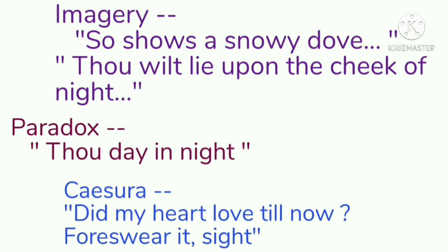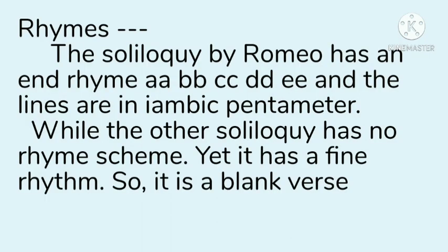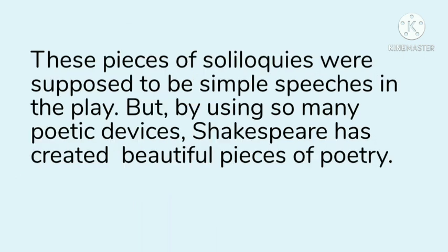There is also a paradox where both day and night are used together in a sentence. Another important device is caesura — 'Did my heart love till now? Forswear it, sight.' Regarding rhyme scheme, the soliloquy by Romeo has an end rhyme: AA BB CC DD E, and the lines are in iambic pentameter, so there is a very good rhythm. The other soliloquy has no rhyme scheme yet has a fine rhythm, so it is in blank verse. These soliloquies were supposed to be simple speeches in the play, but by using so many poetic devices, Shakespeare has created beautiful pieces of poetry — hats off to the great master, Shakespeare.